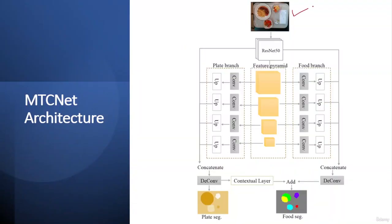Here you can see the input image, and then ResNet-50 is used to extract the feature pyramids. Here you can see the four different feature pyramids. Then you can observe the food branch over here and you can also see the plate branch over here.